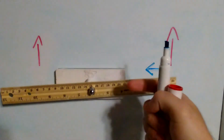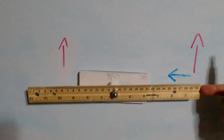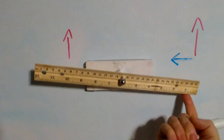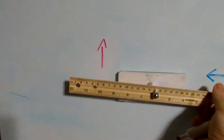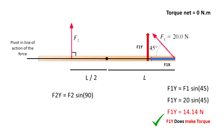Remember that forces in the x direction that go in the same line of action of the pivot do not produce any torque. You can try it yourself — that force produces no torque. The torque produced by the y component counteracts the torque produced by the other force. So if the torques produced by both forces are equal, the net torque is equal to zero. Regarding force 2, the y component is defined as the magnitude of F2 times the sine of 90 degrees. Since sine of 90 equals 1, the y component of force 2 is the whole magnitude of F2. There is no F2x component — that force is only in the y direction.